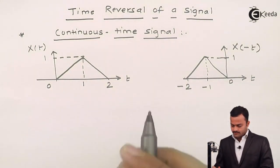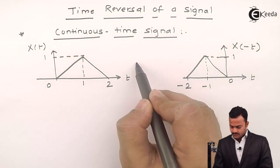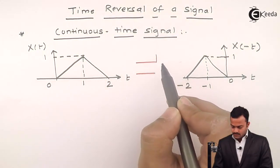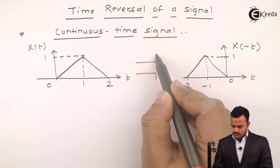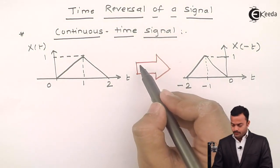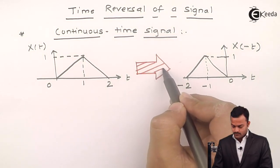So, what we have done over here, x of t, we have done a time reversal, so that we got a new signal, which is mirror image of original signal.